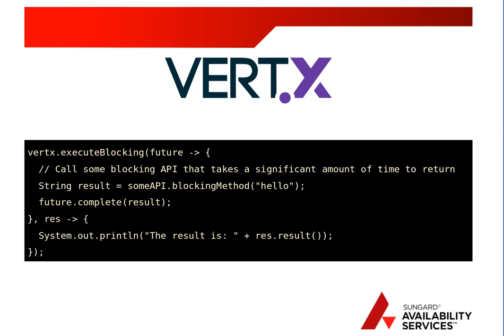Here's what execute blocking looks like. You take the VertX object, call the execute blocking method, and pass in a lambda function and a second lambda function. The first lambda runs off the event loop in the VertX thread pool. The second lambda is back inside the event loop so you can do further processing or hand off to other verticals.